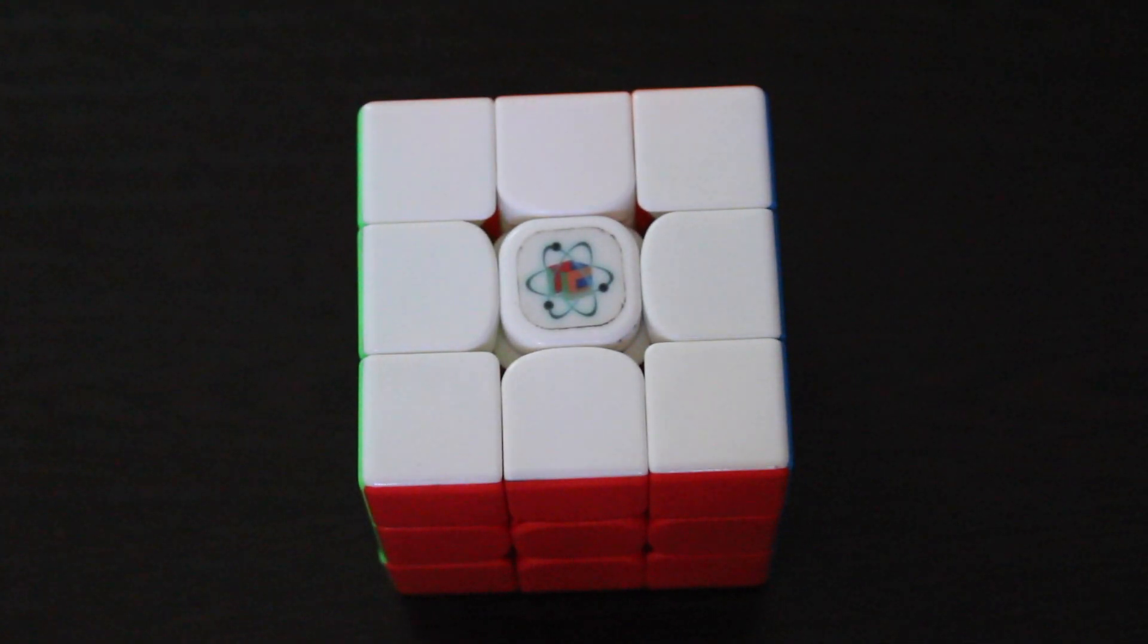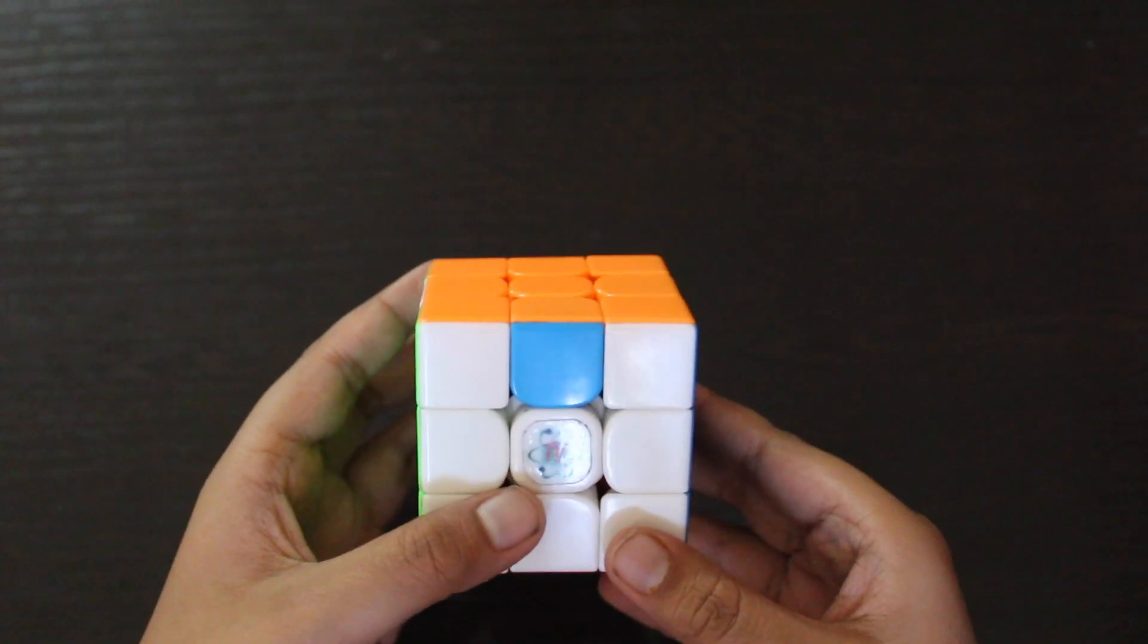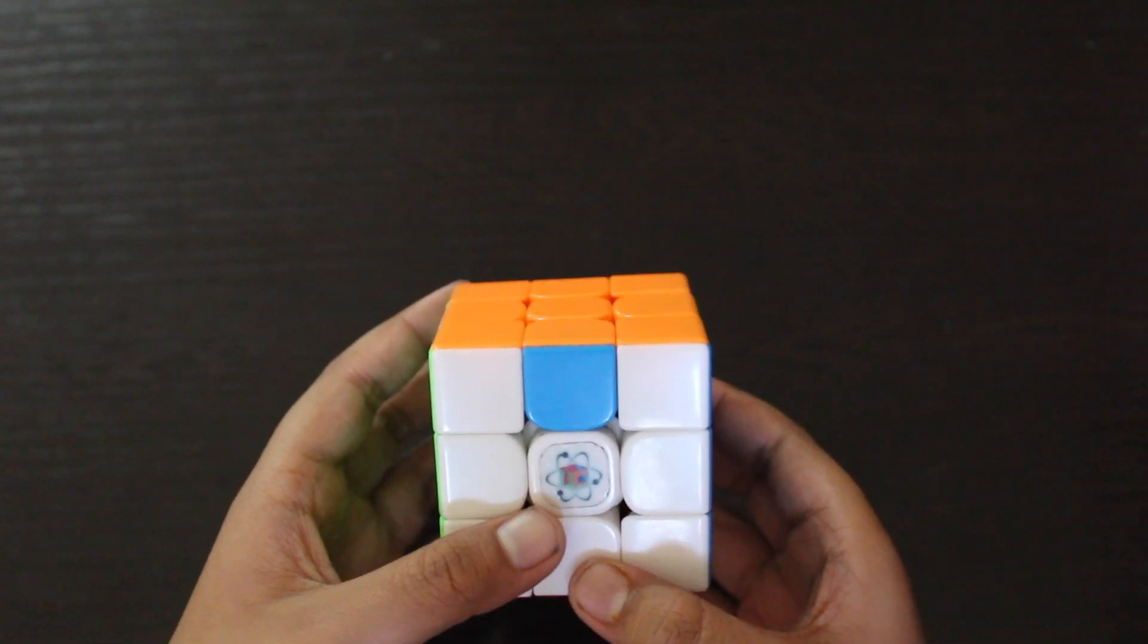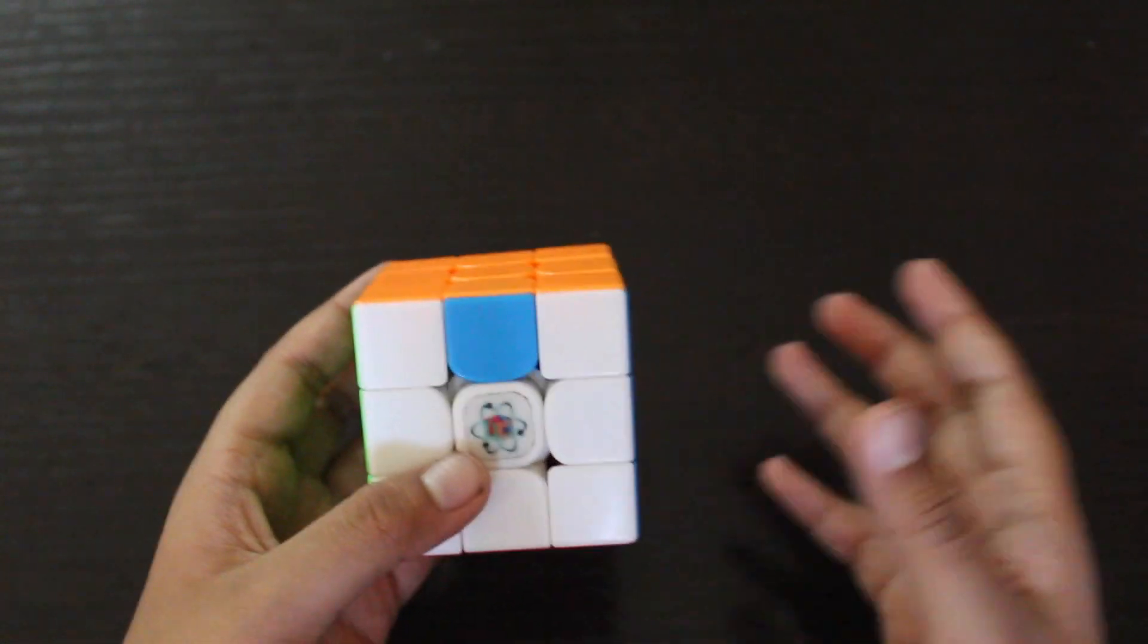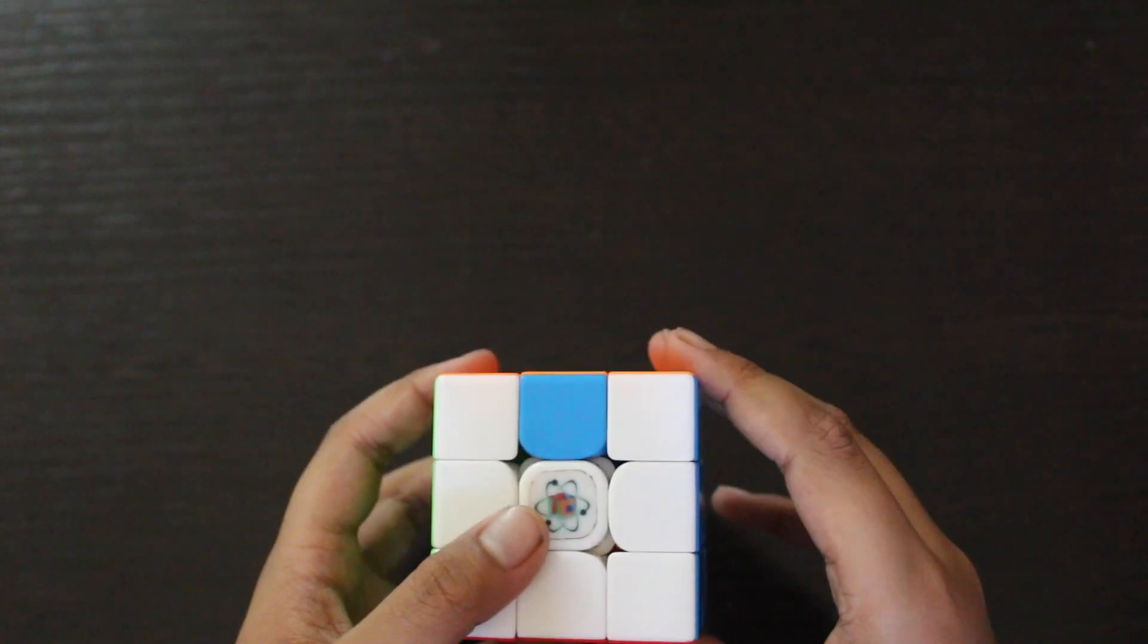What's up YouTube, it's ThurnoCuber here and today I'm going to show you my EPL algorithms and executions. If you don't know what EPL is, it is edge permutation of the last layer, or you can also call it edges permutation of the last layer. It is a subgroup of the PLL where all the edges are oriented.